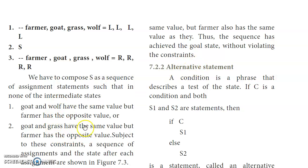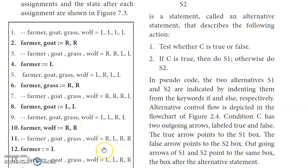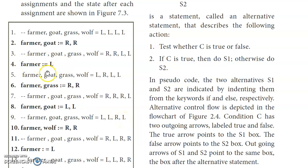Thus the sequence of assignment statements has achieved the goal state without violating the constraint. This is an example of sequential statements, where in sequential order the statements execute and if we complete in order we achieve the final goal. We can now look at alternative statements.